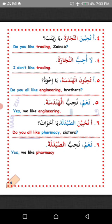Number five: Atuhibbu al-handasa ya ikhwa? Do you like engineering, brothers? Now the answer: Nuhibbu al-handasa — we like engineering. Remember, al-muhandis means engineer. Huwa muhandisun — he is an engineer. Ana muhandisun — I am an engineer.